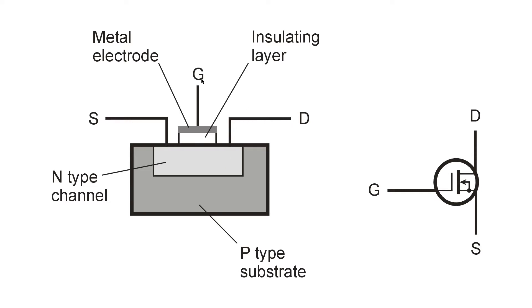The gate electrode produces an electric field that more or less constricts the flow of charge carriers through the channel. But it does so not through a P-N junction, but rather through a capacitor-like device which has an insulating or dielectric layer.